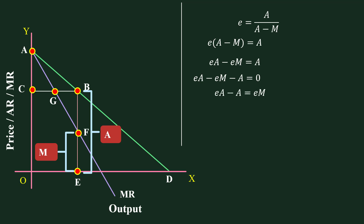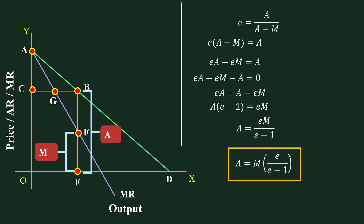Taking −EM to the right-hand side and factoring A on the left: A(E − 1) = EM. Taking (E − 1) to the right-hand side gives A = EM / (E − 1), and by rearrangement, A = M × E / (E − 1). This formula explicitly explains the relation among Average Revenue, Marginal Revenue and Elasticity of Demand.